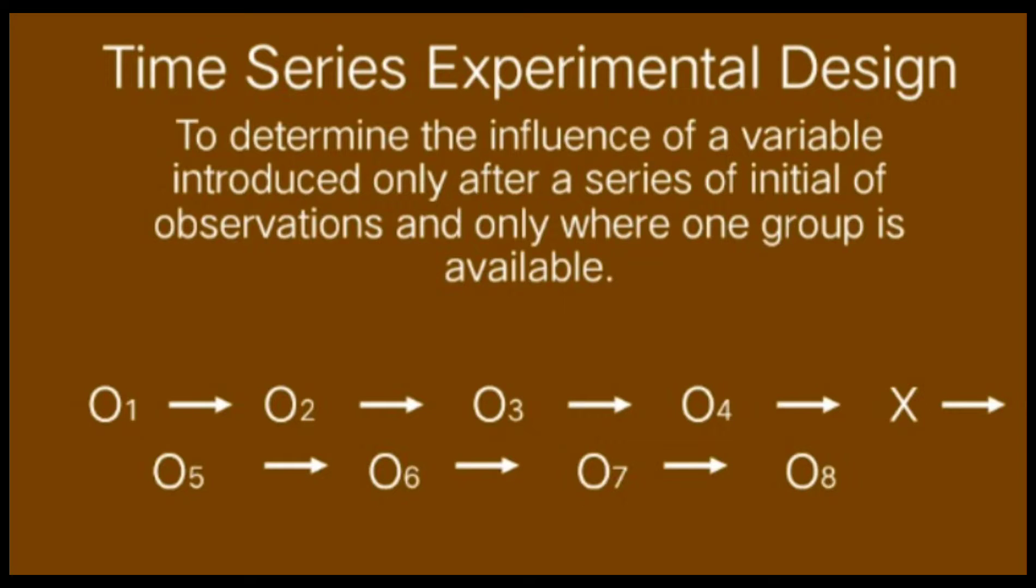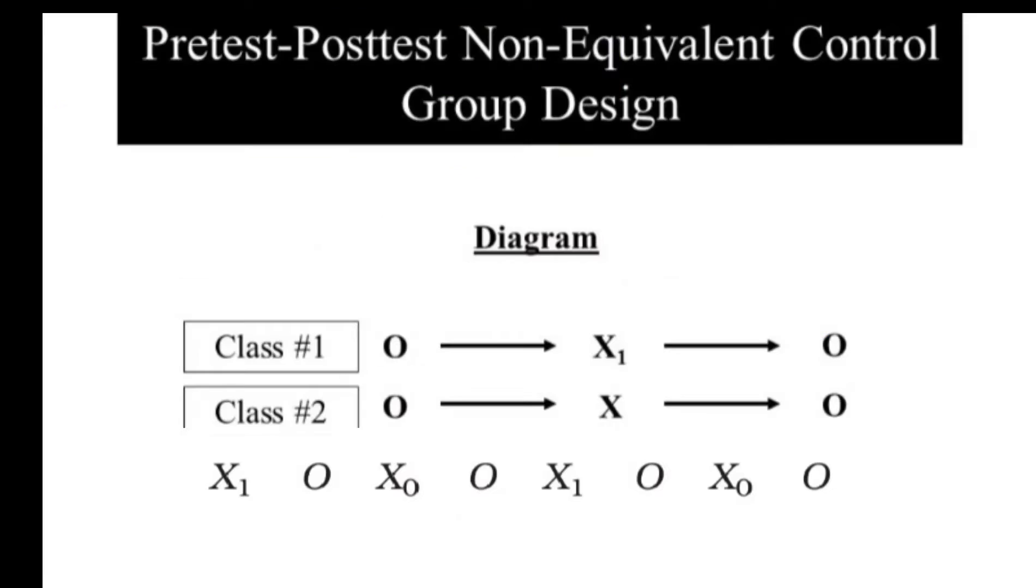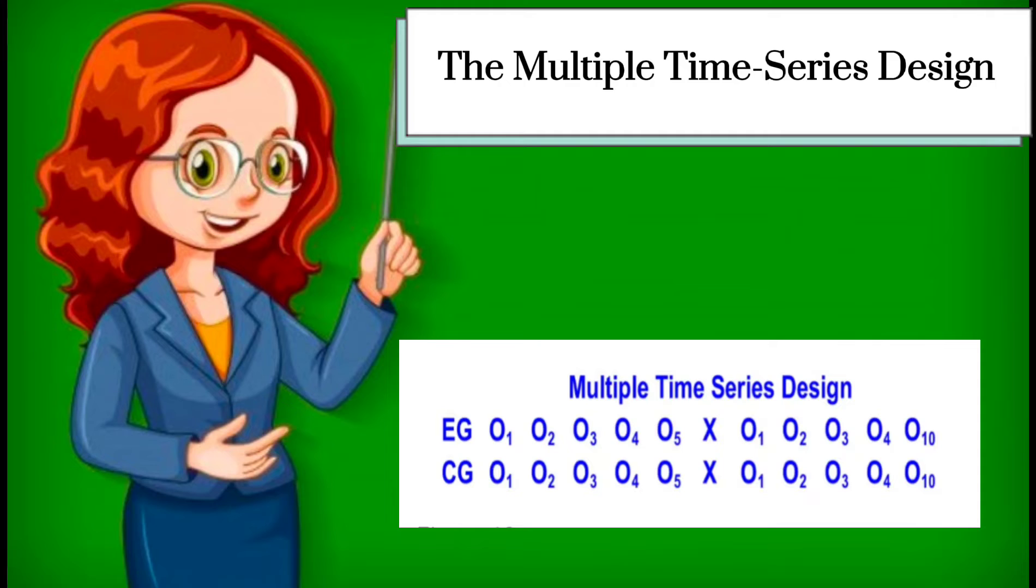The time series design is an example of a single group quasi-experimental design. This multiple group design has some of the features of the static group comparison and the one group pre-test post-test design. A second multiple group quasi-experimental design is the multiple time series design.